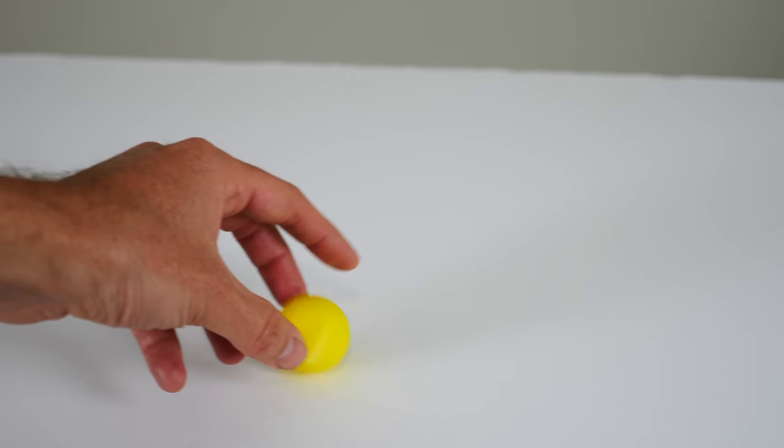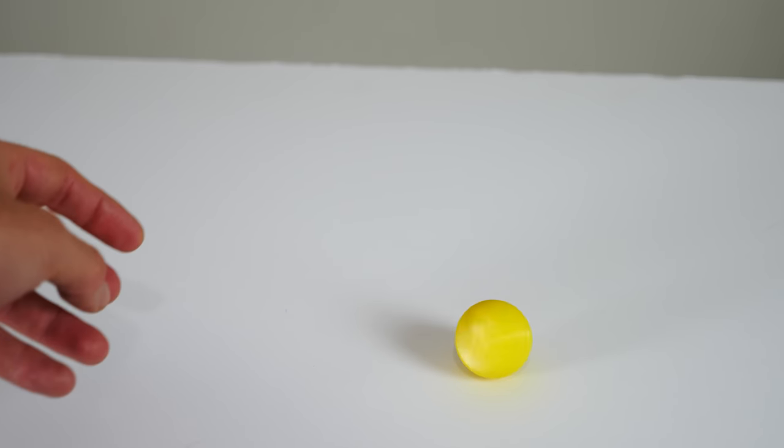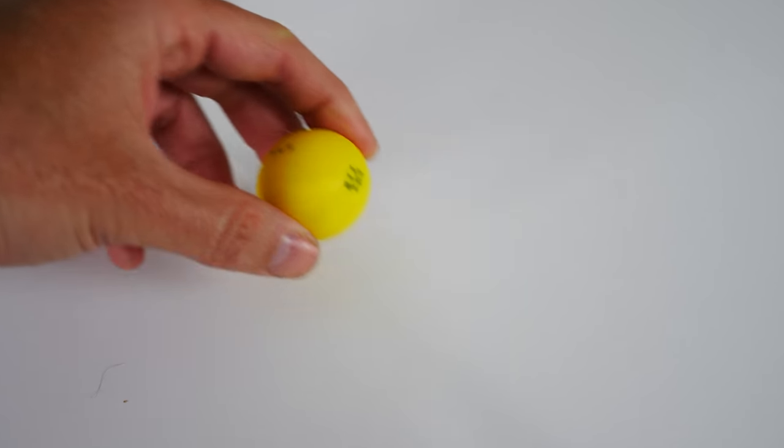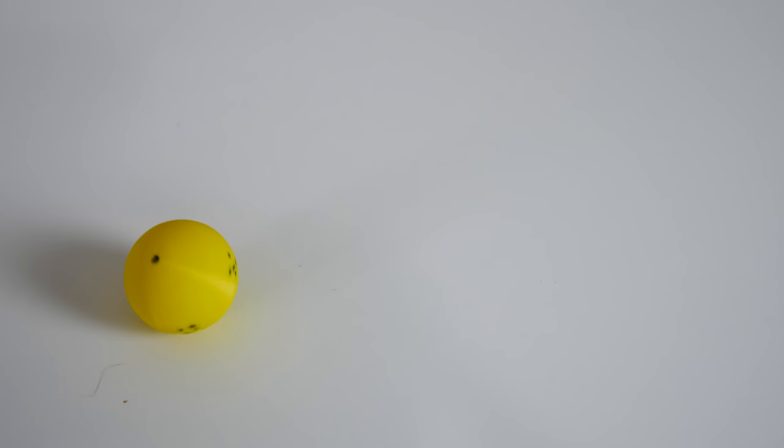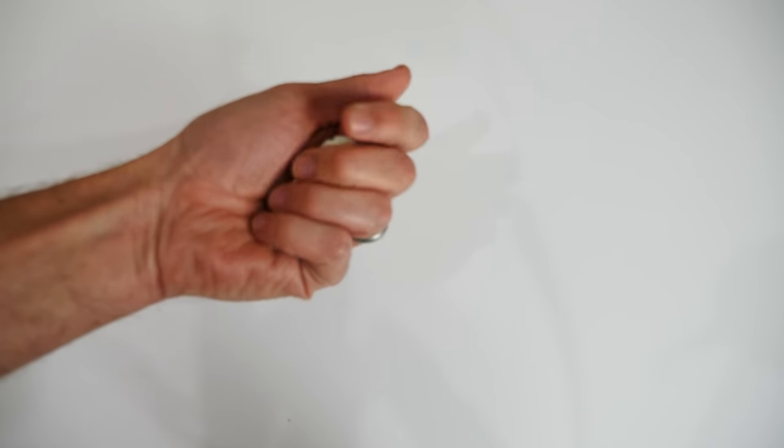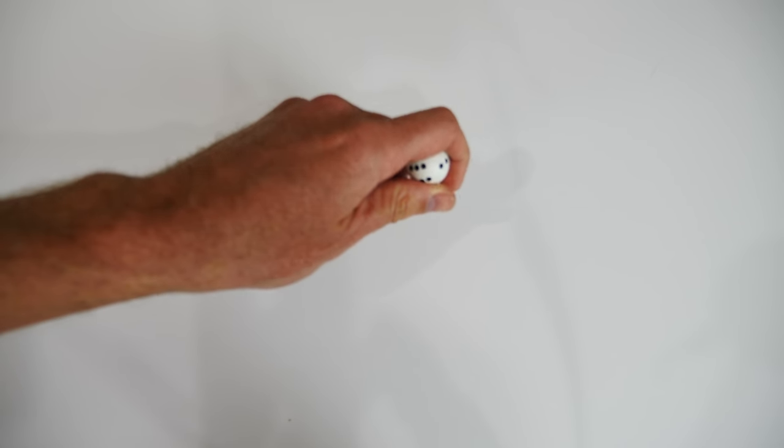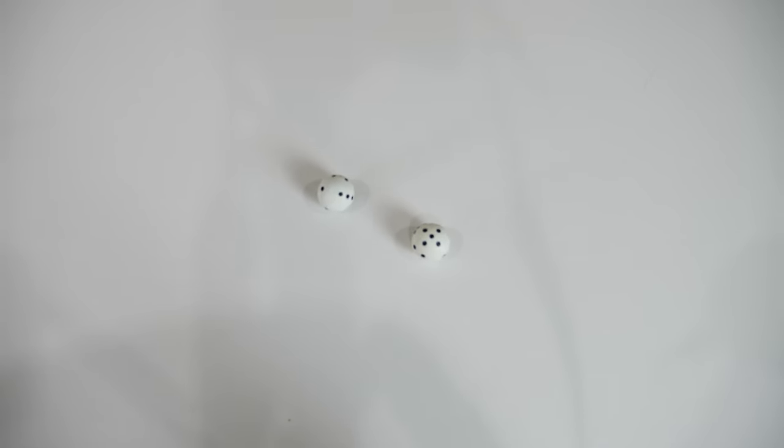So then you can roll it and it lands on one specific side. Now you have a fair die. And you can turn these six-sided spheres into actually fair die. Five and a three.